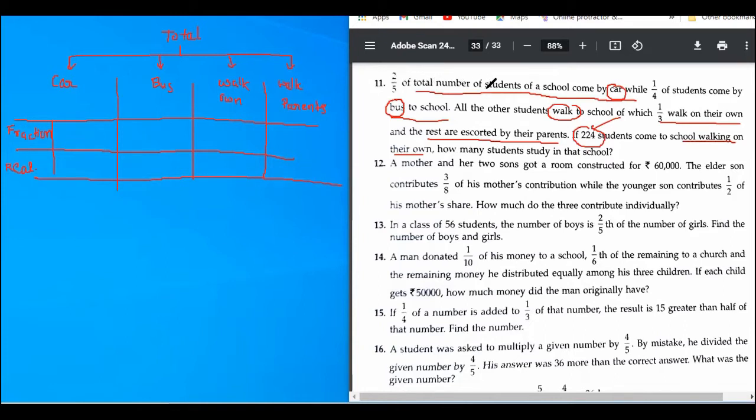Let us read the question again one last time. Two by five of the total come by car. So can I write two by five over here? Yes. Now, one by four of students come by bus. One by four. And all other students walk to school. That means I have to first think in terms of total, in terms of fraction. Can you tell me in terms of fraction, how many students would be there? What is total? One. Very good.